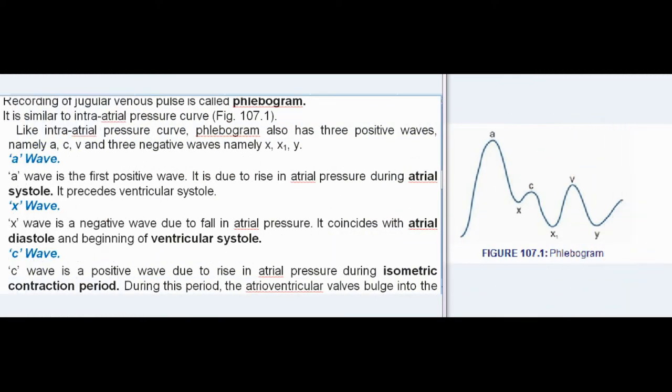Recording of venous pulse: Jugular venous pulse tracing. Recording of jugular venous pulse is called phlebogram. It is similar to intra-atrial pressure curve, Figure 107.1. Like intra-atrial pressure curve, phlebogram also has three positive waves, namely A, C, V, and three negative waves namely X, X1, Y.